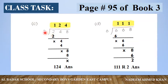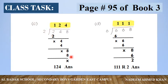پھر 2 کے table میں 4 آتا ہے: 2, 2, 0, 4 — 4 یہاں لگا دیجیے۔ 4 میں سے 4 subtract کریں — کچھ نہیں بچا۔ پھر 8 bring down کر دیا۔ 2, 4, 0 — یہاں 4 لگا دیجیے، 8 میں سے 8 subtract کریں — کچھ نہیں بچا۔ تو quotient ہمارا 124 ہے — یہ ہمارا جواب ہے۔